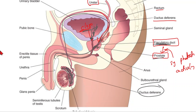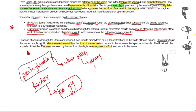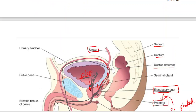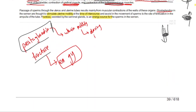This is the bulbourethral gland. During ejaculation, sperm are expelled through the external urethral orifice. The bladder sphincter and bulbospongiosus muscle close to prevent urine mixing with sperm. Muscular contraction of the walls of these organs moves the sperm forward.